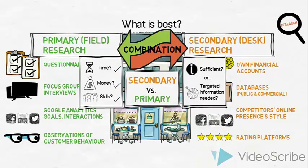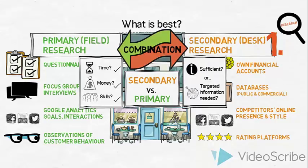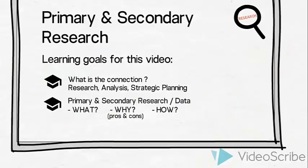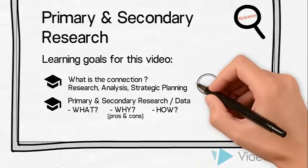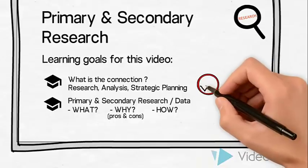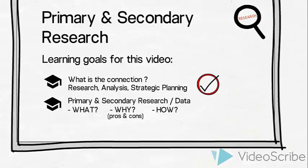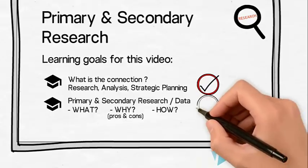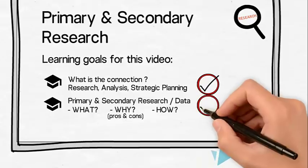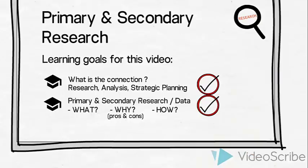As marketers, we would usually recommend conducting the secondary research first and primary second. This is to make sure we spend our resources wisely. We have now established a connection with the rest of the research, analysis, and strategic planning process, and subsequently used an example to illustrate what primary and secondary research is. We have highlighted the pros and cons of each, and how we can conduct these two types of research.